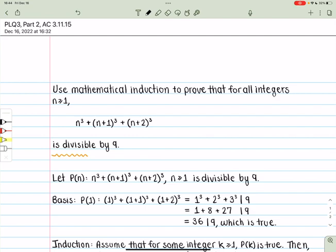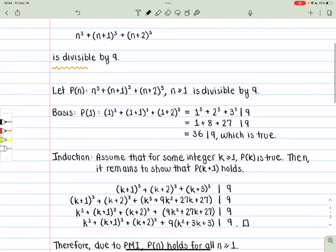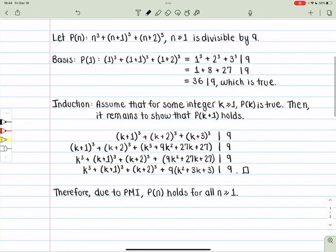So let's walk through the solution here. First, let's define the statement P(n) as n³ + (n+1)³ + (n+2)³ for n ≥ 1 is divisible by 9.